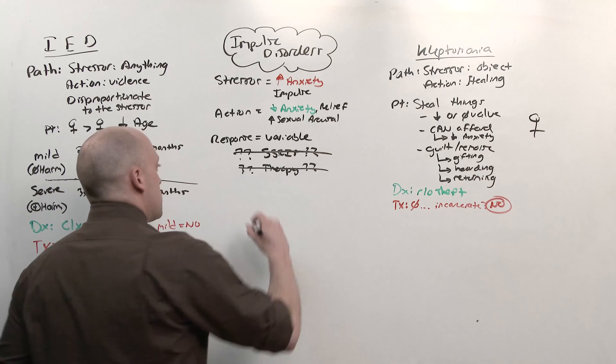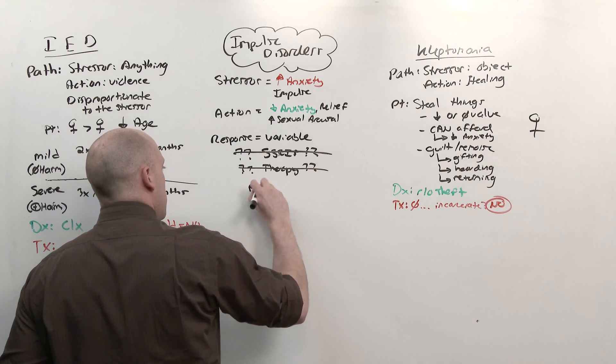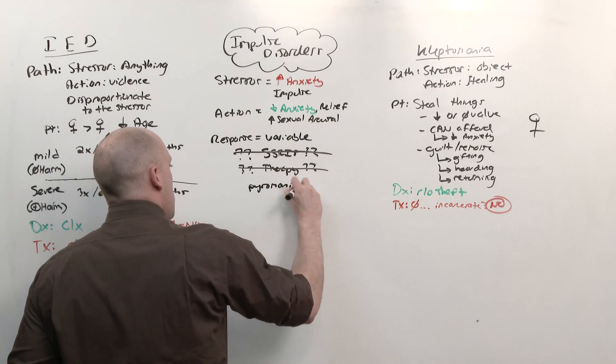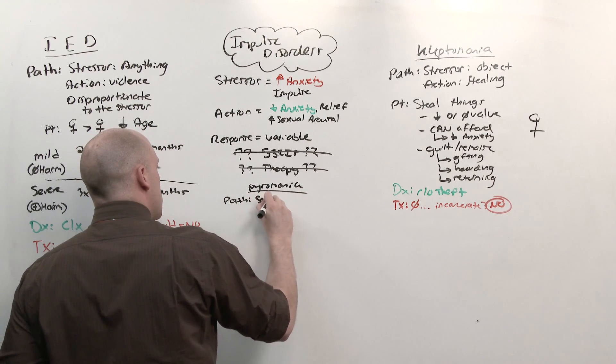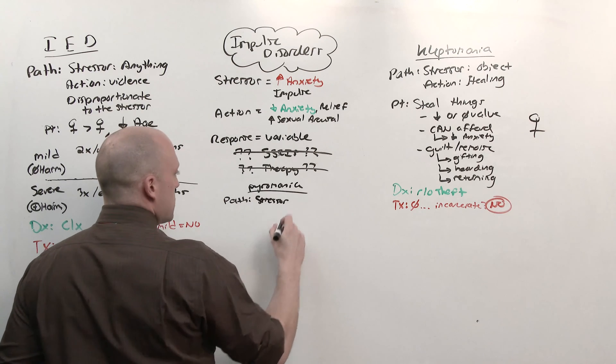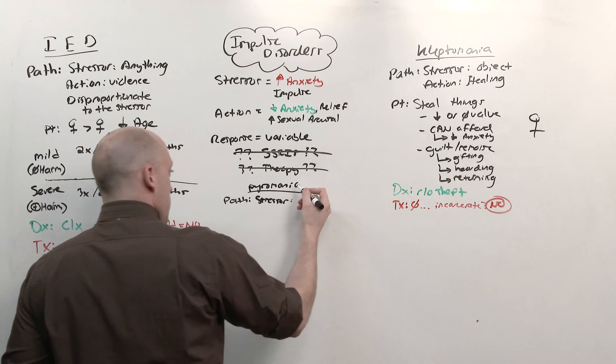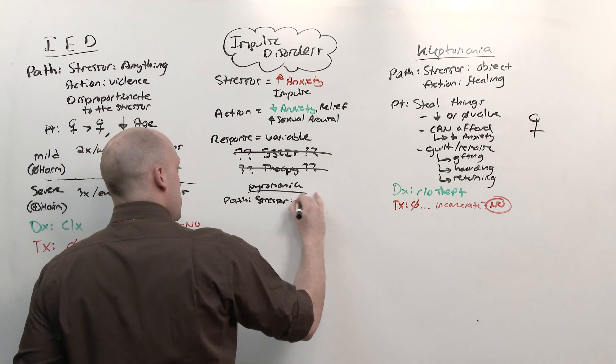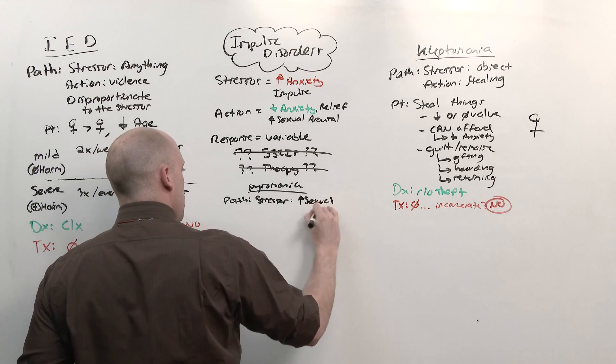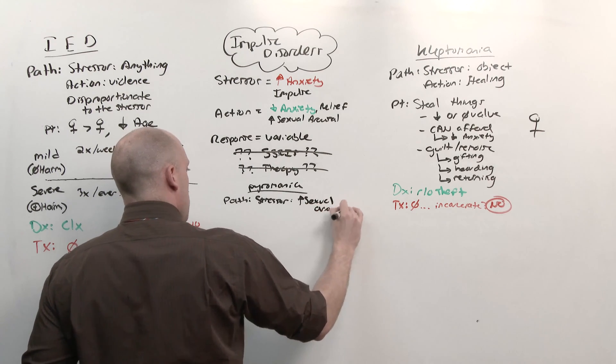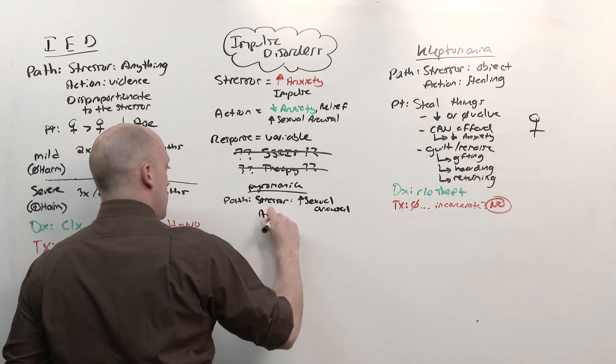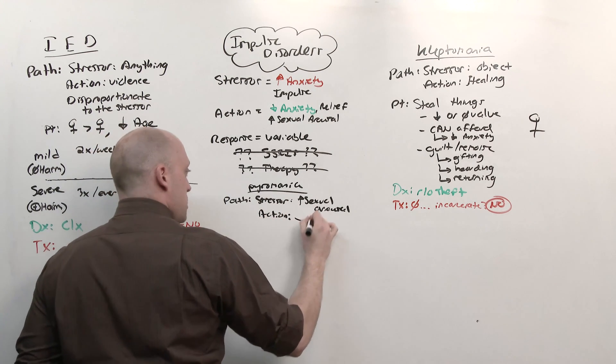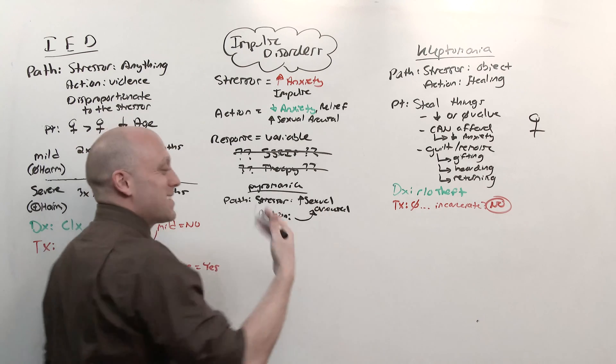And lastly is pyromania. And this one's a bit different. Because in the pathology, there really isn't a stressor. There's nothing that increases anxiety. Pyromania is the lighting of fires to increase sexual arousal. And they may feel the same anxiety and the impulse to do this. But the action is just the same as the stressor. They want to do it because they like it.